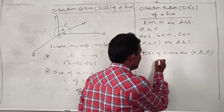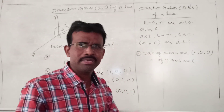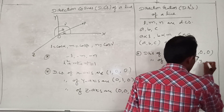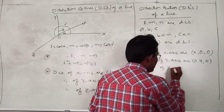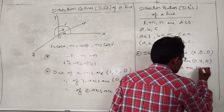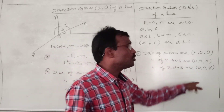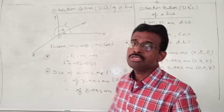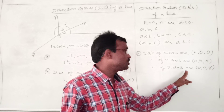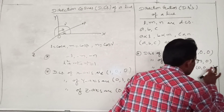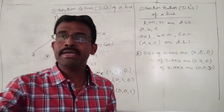Direction ratios of the Z axis are 0, 0, z — where small z is any point on the Z axis. These are the direction ratios of the coordinate axes: X axis gives x, 0, 0; Y axis gives 0, y, 0; and Z axis gives 0, 0, z.